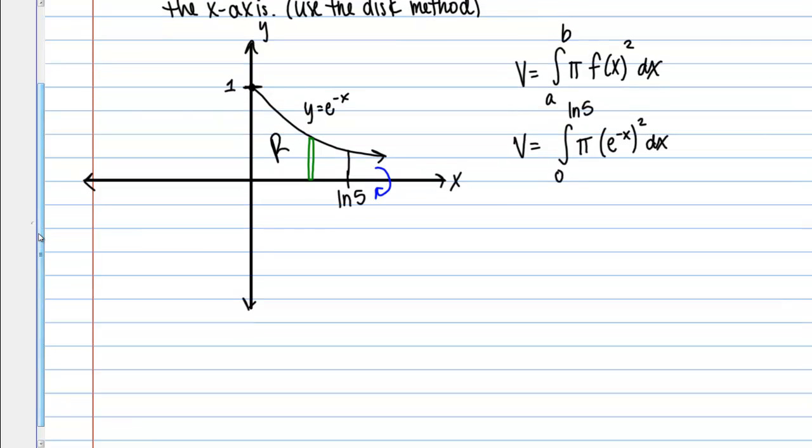And from there I just have to compute my integral. So in my case it's probably helpful to pull that pi out front. And so what I'm doing is I'm integrating E to the negative 2X DX. So if I take the antiderivative, I get negative 1 half E to the negative 2X. And I want to evaluate that between 0 and natural log of 5. And then I do also want to just keep this pi out front.